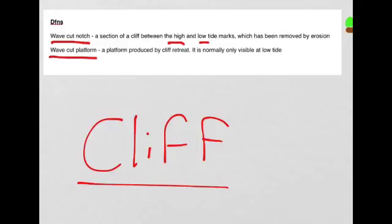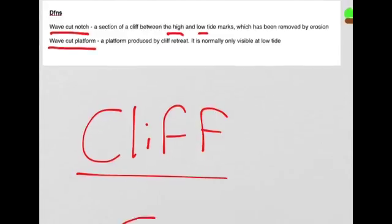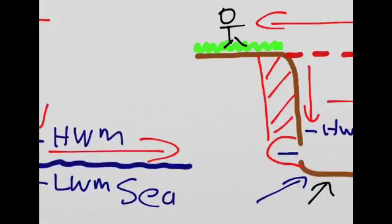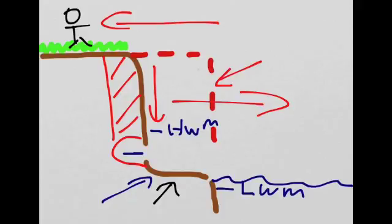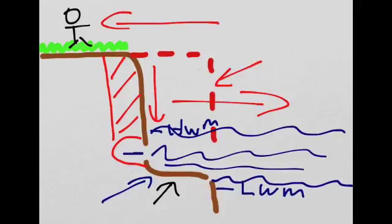Wave cut platform: A platform produced by cliff retreat, normally only visible at low tide. If the tide comes back in again, i.e. the water level rises back up to this level, the wave cut platform will be hidden by the higher water level.